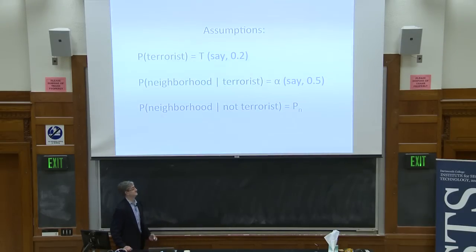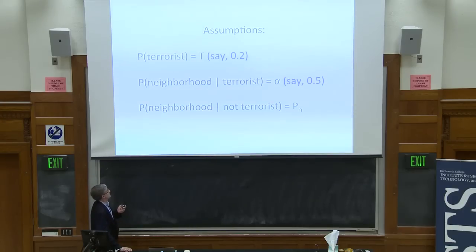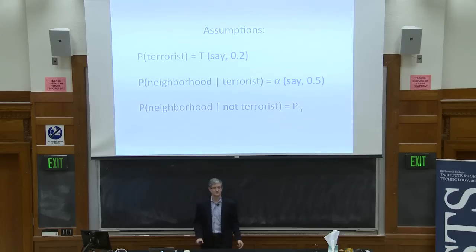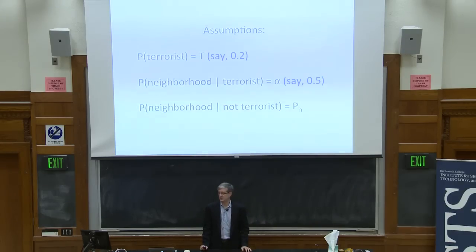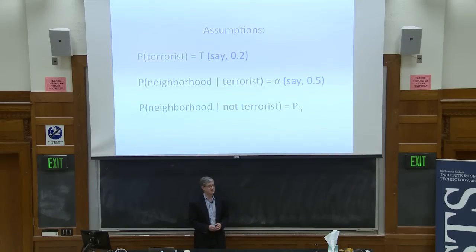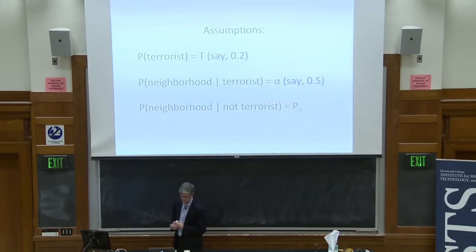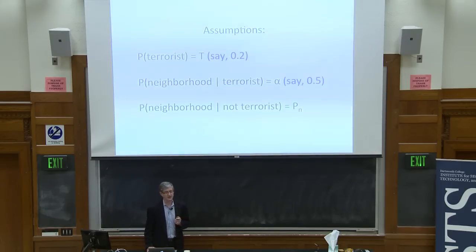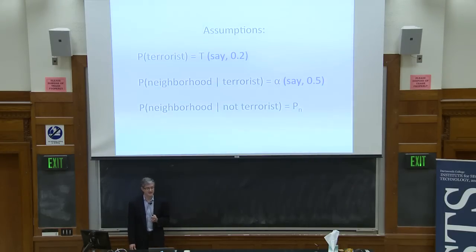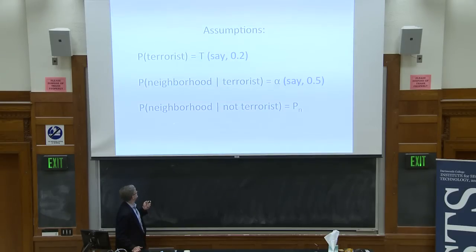Let's make up some numbers. Say the prior probability that Bob is a terrorist is 20% — way higher than the one-in-a-million probability for a random population member, but let's use it. If he's a terrorist, there's a 50-50 chance he's in the near neighborhood of known bad guy. If near neighborhood means a path of three hops or less, the probability that two random people are in the same near neighborhood is about 22%. So p_n is approximately 22%.